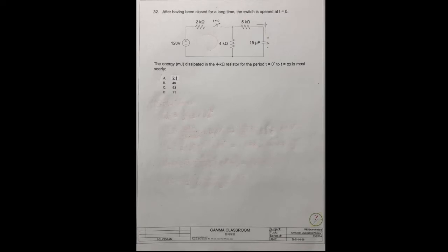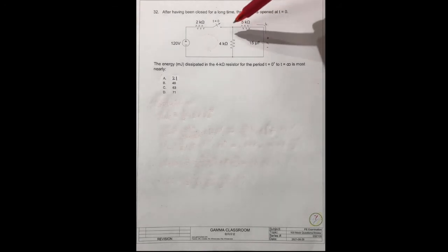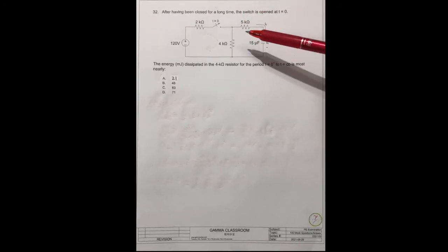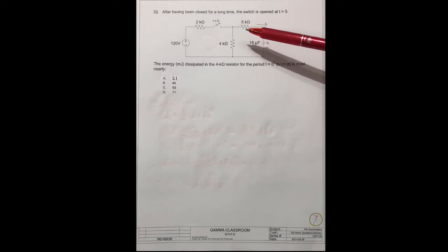If you look at this circuit, you can find a power source and several resistors. Because resistors don't store energy — they only consume energy — the only energy-storing element in this circuit is the capacitor.